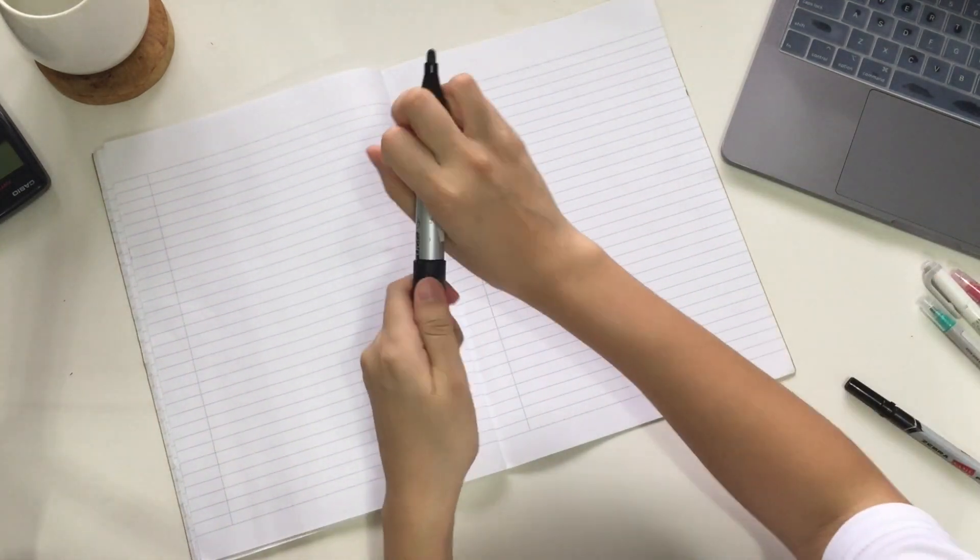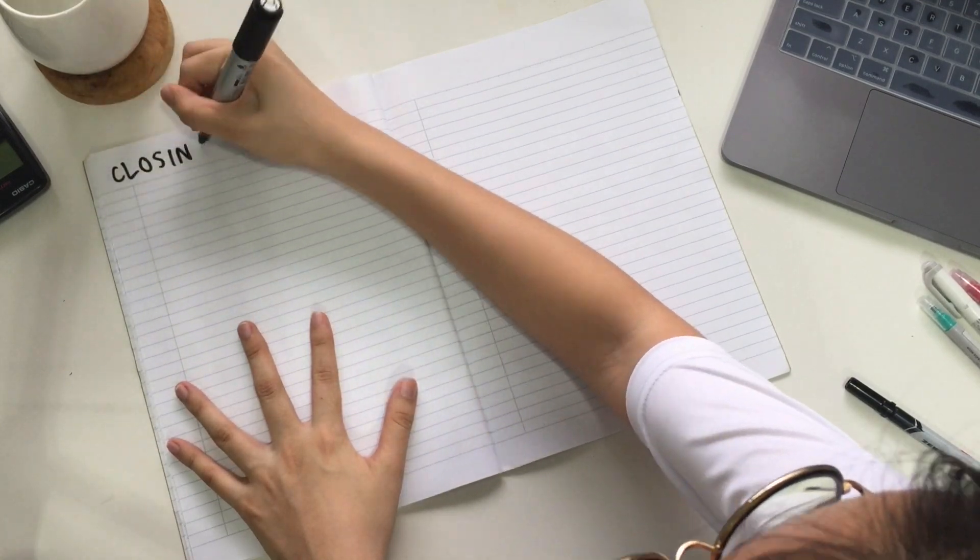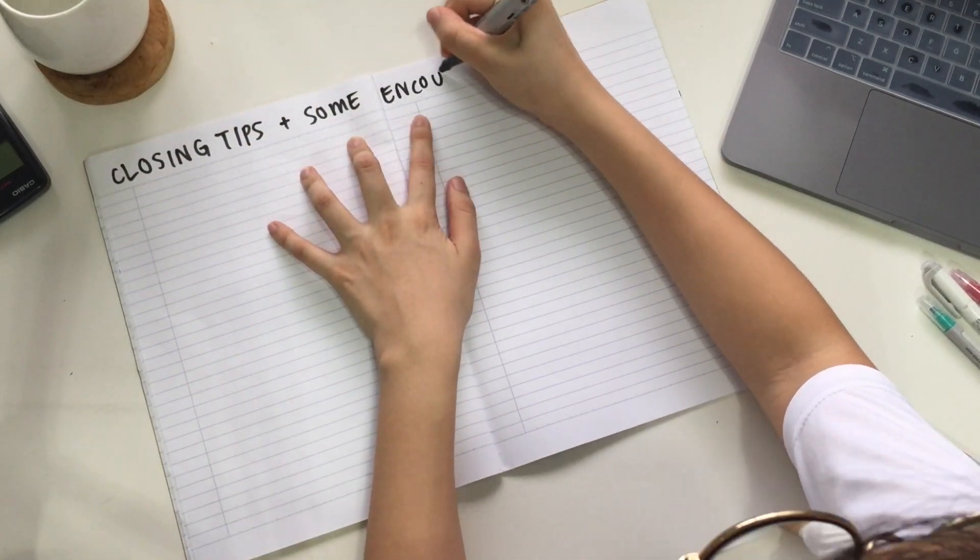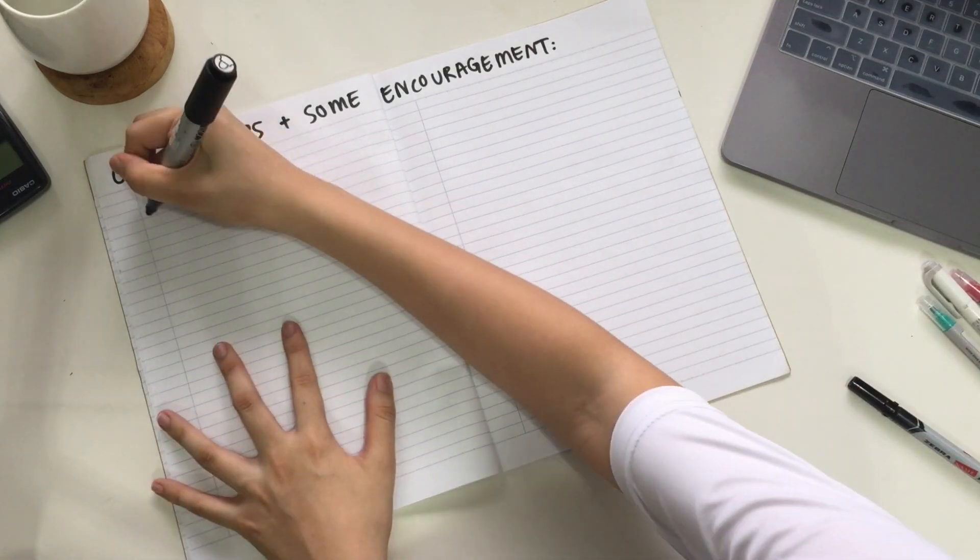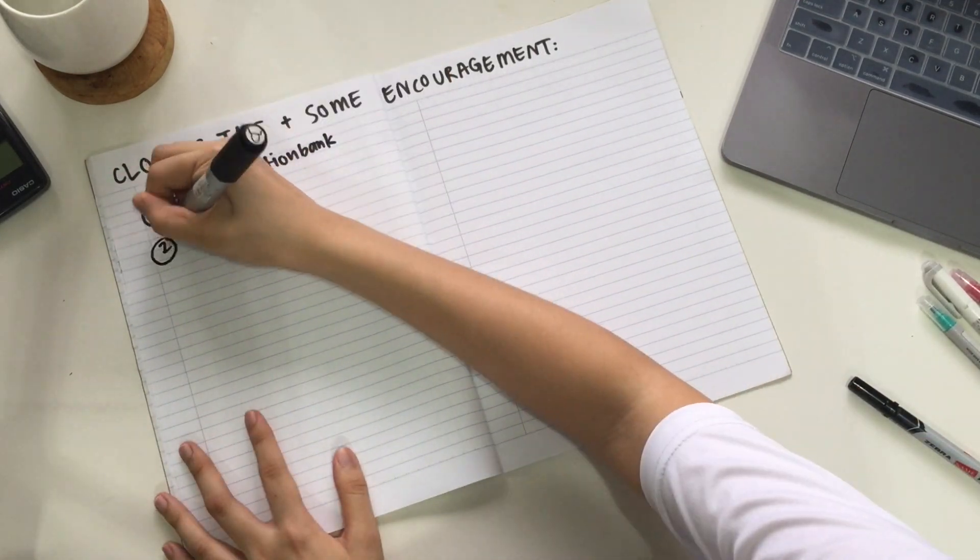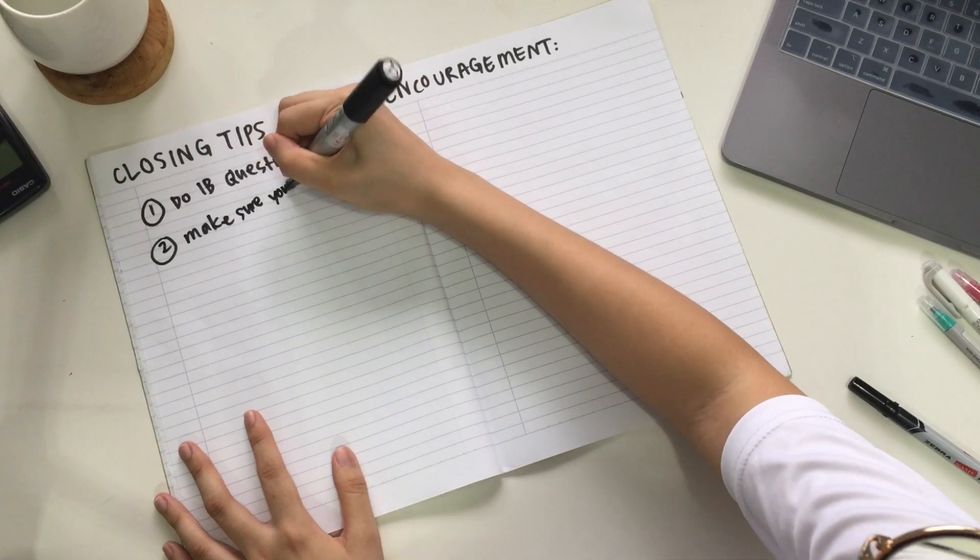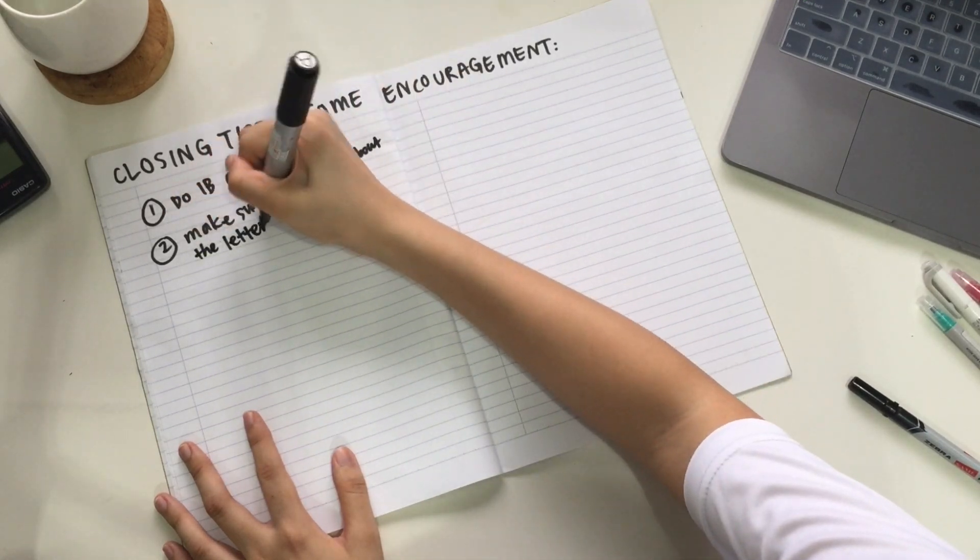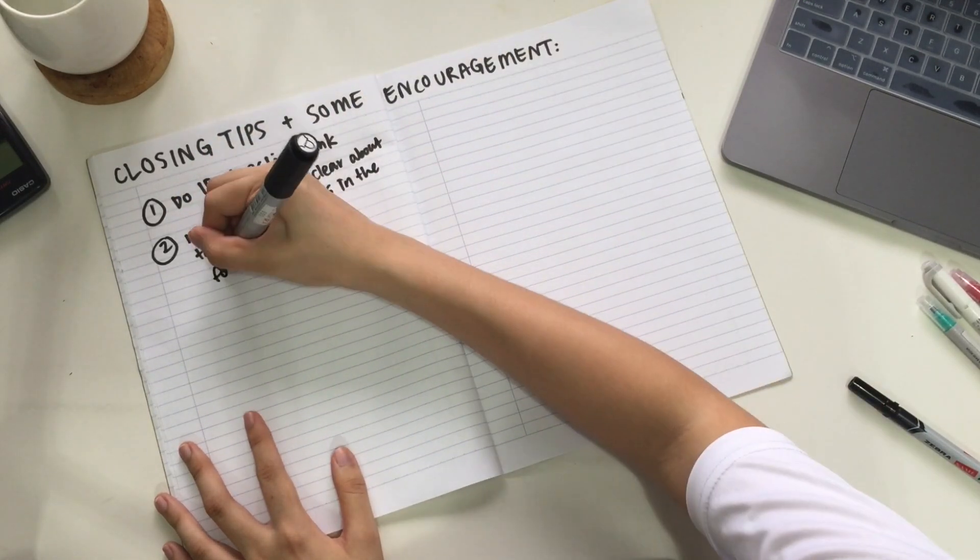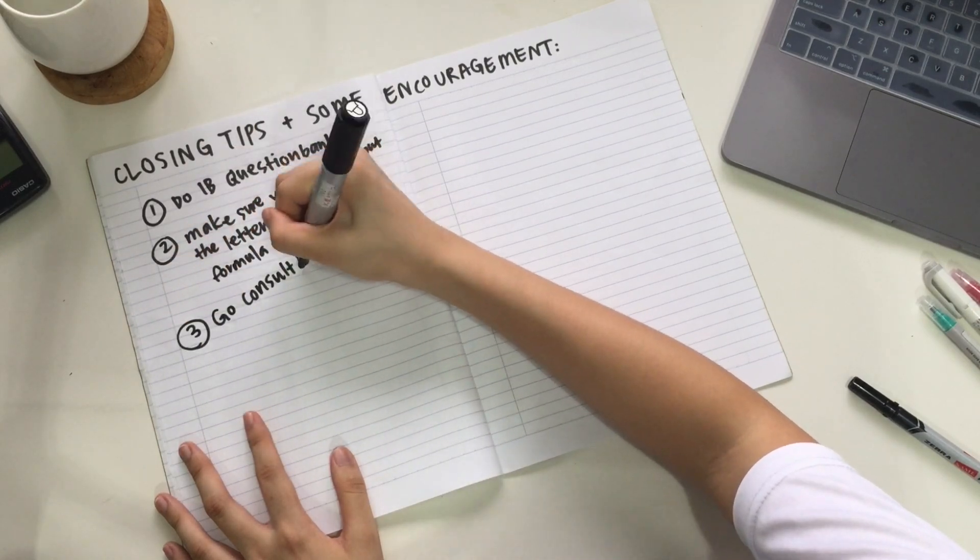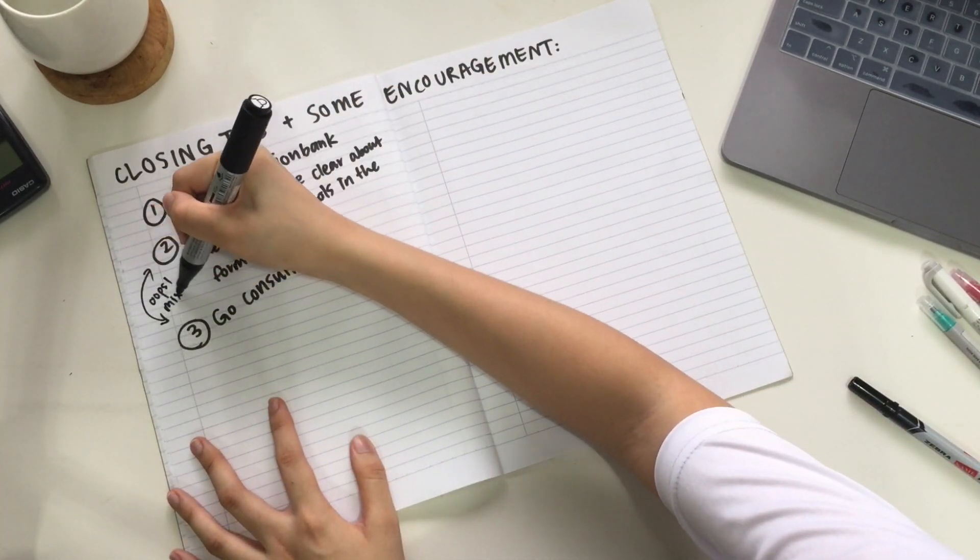In conclusion, I think I would like to just leave some of my closing tips and some encouragement. I think the main tips I've already mentioned: do the IB question bank, make sure you're clear about the letters, symbols, and formulas, and finally consult your teacher.